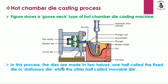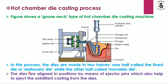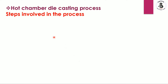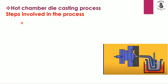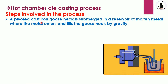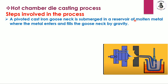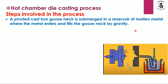In this process the dies are made in two halves. One half is called the fixed or stationary die, while the other half is the movable die. The dies are aligned in position by means of ejector pins, which also help to eject the solidified castings from the die. A pivoted cast iron gooseneck is submerged into the reservoir of molten metal, where the metal enters and fills the gooseneck by gravity.